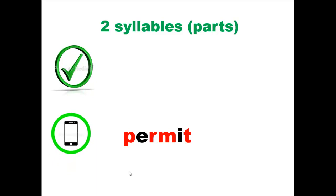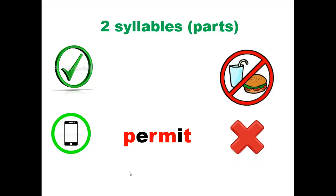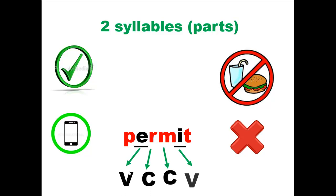Permit. What is the meaning of permit? Permit means to allow. For example, is the cell phone permitted? Yes, it is permitted. Libraries also don't permit food. The pattern is: vowel sounds, consonant, consonant, vowel. Then the word should be divided between the consonants in the middle, which are different consonants.